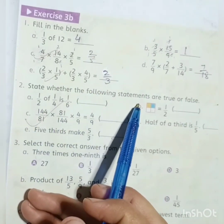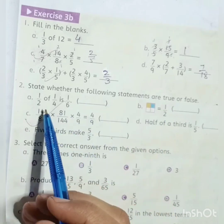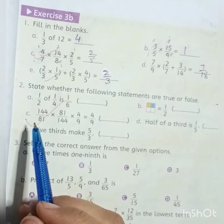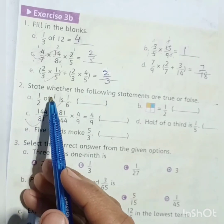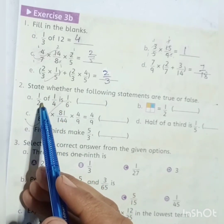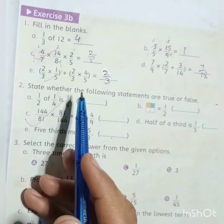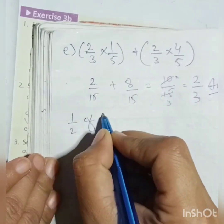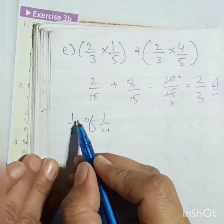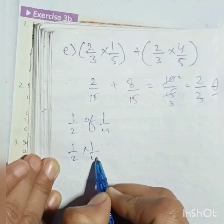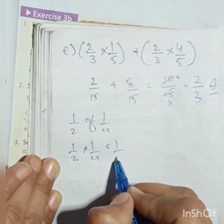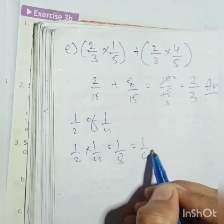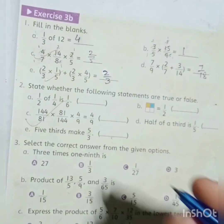State whether the following statements are true or false. Statement 1: 1/2 of 1/4 is 1/6. We multiply: 1×1 = 1 and 2×4 = 8. So the answer is 1/8, not 1/6. Therefore this statement is False.